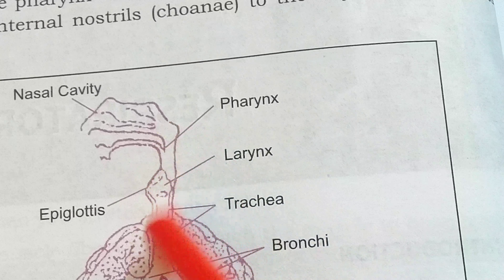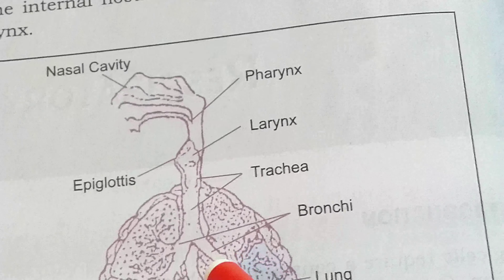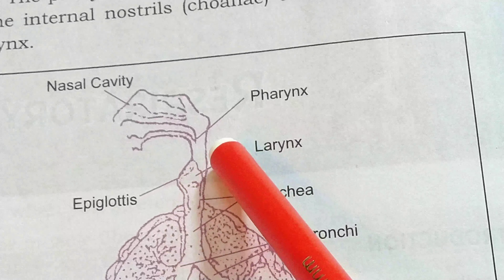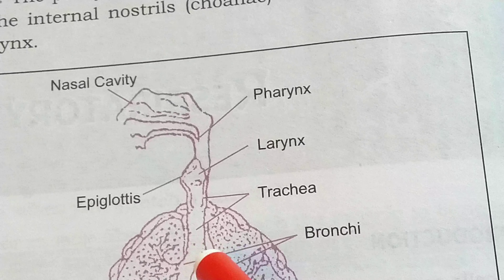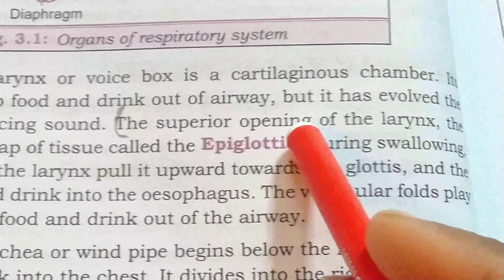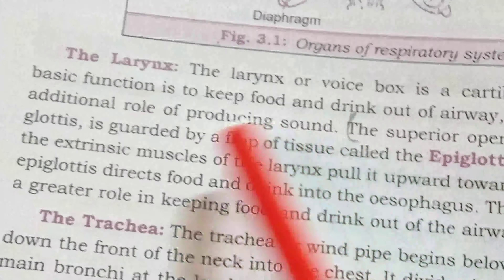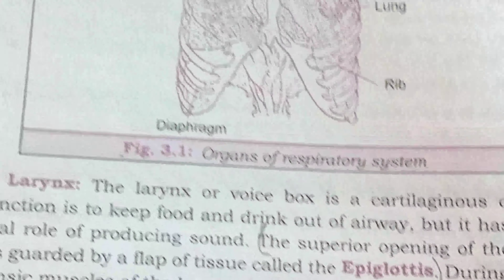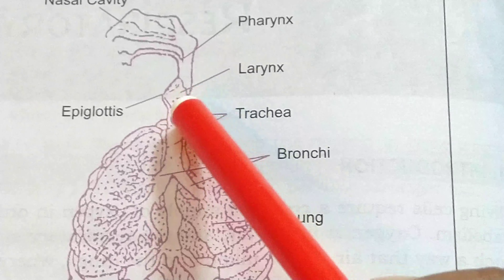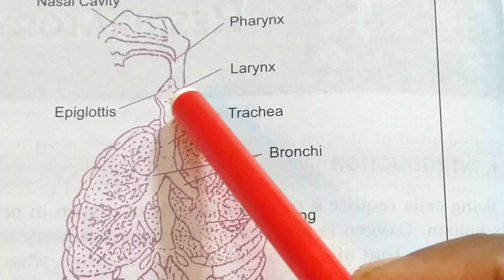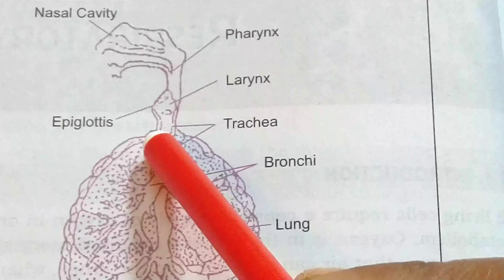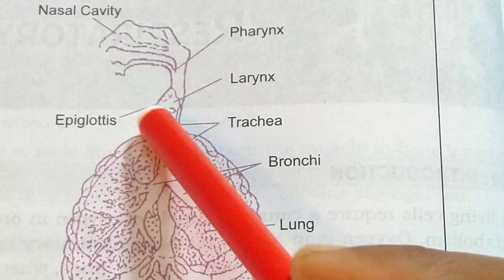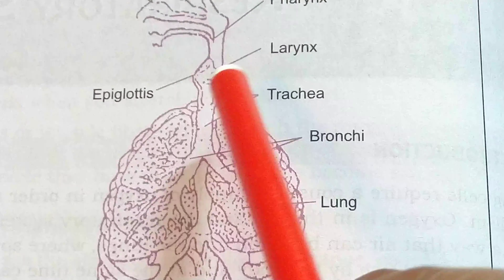The larynx guards food particles from entering the airway. The superior opening of the larynx is called the glottis, which is guarded by a flap of tissue called the epiglottis — a flattened flap-like structure that acts as the lid of the larynx.